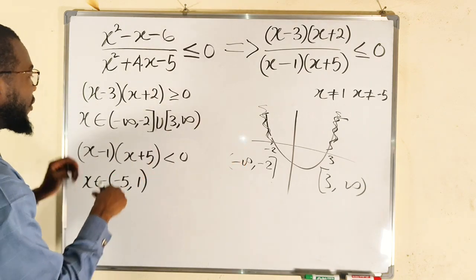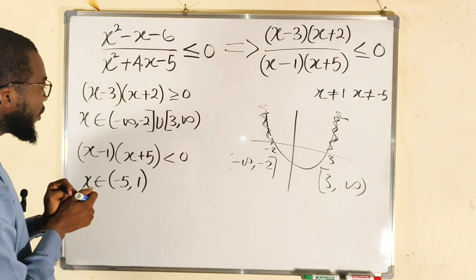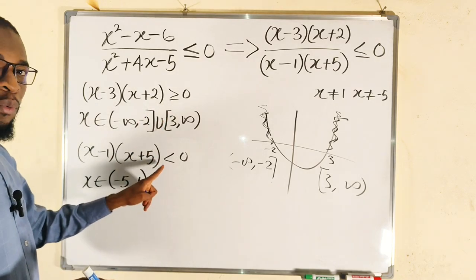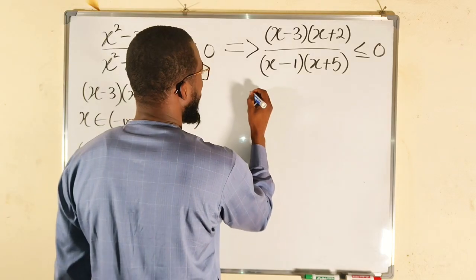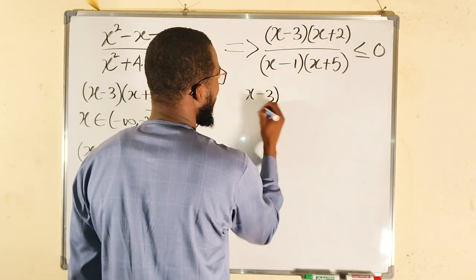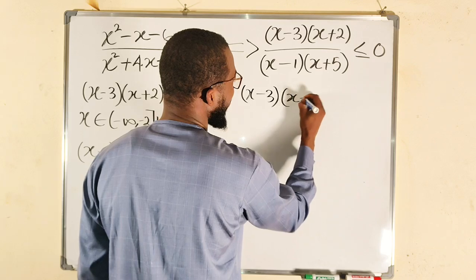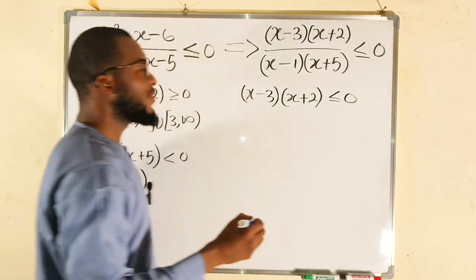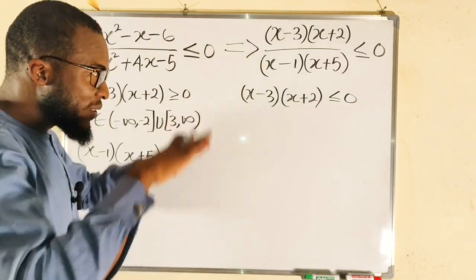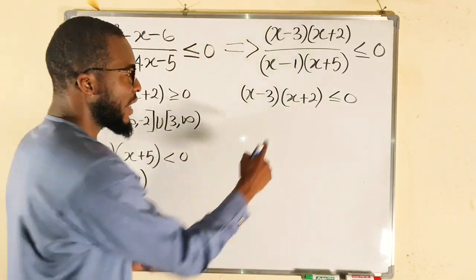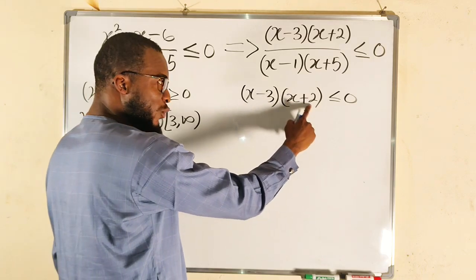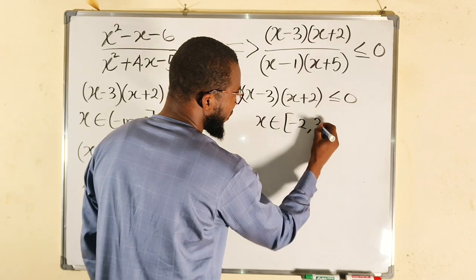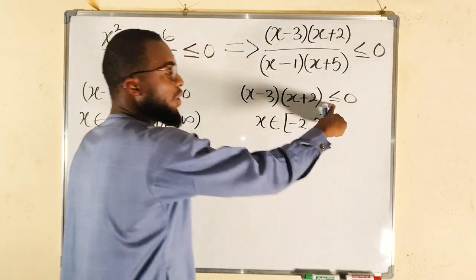We are done with the first condition. For the second condition, the numerator is negative while the denominator is positive. We take (x minus 3)(x plus 2) less than or equal to zero. If it is less than, the solution will be within the roots. The roots are negative 2 and positive 3, and both are included because of the 'equal to.'